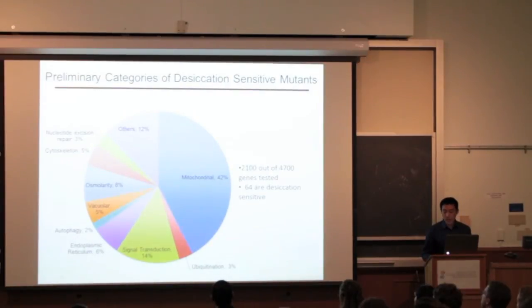We took all the desiccation sensitive strains from the screen and put them into this preliminary category graph, based on their functions. Out of the 2100 genes I've tested so far, 64 were desiccation sensitive.